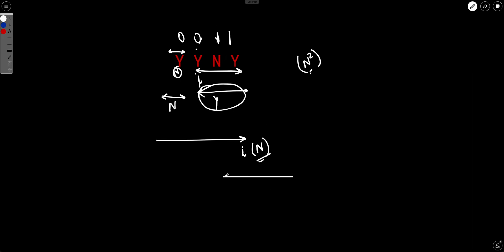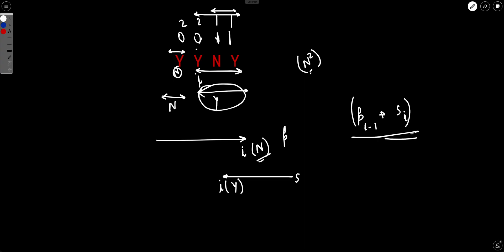Similarly, you can find a suffix sum where the ith value denotes how many characters equal Y from index I onward. For example, in this case the suffix sum would be 1, 1, 2, 2 — because in the full string there are two Y's. Now, once you have the prefix sum P and suffix sum S, at any given ith hour your penalty would be P[i-1] plus S[i]. You can calculate the prefix sum in O(N), the suffix sum in O(N), and then iterate over all indexes once more to find the penalty at each index and take the minimum.